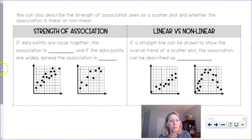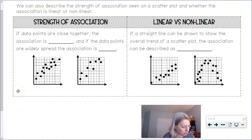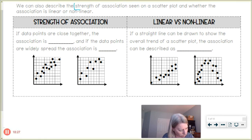All right, next we can also describe the strength of association. So please highlight or underline the word strength, strength of association seen on a scatter plot and whether the association is linear or nonlinear. So linear means line. So underneath the word linear, oops, let me just put in a different color here. Underneath the word linear put line, like a straight line. Nonlinear would be not a straight line.